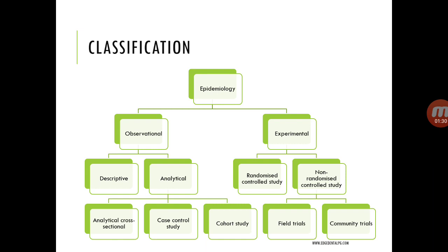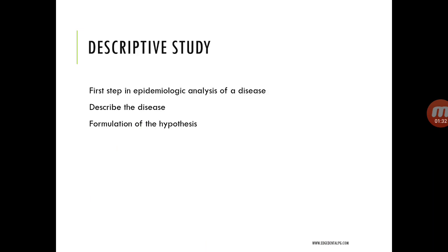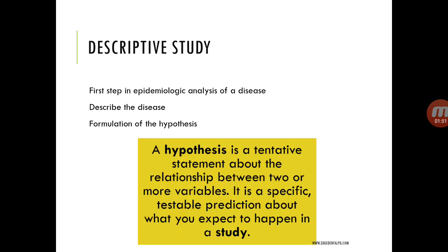We will cover the important study designs. The descriptive study is basically the first step in epidemiological analysis of any particular disease. It helps describe the disease in the perspective of time, place, and person. Most importantly, it helps us formulate the hypothesis — a tentative statement about the relationship between two or more variables, and a specific testable prediction about what you expect to happen in a study.